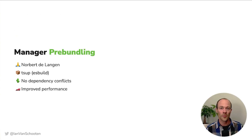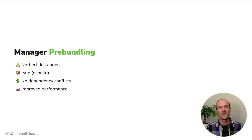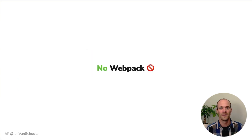Another big change, thanks to heroic efforts from Norbert, is that Storybook is now pre-bundling its manager UI. In the past, it would install packages like Emotion and React Router that it used internally into the user's node_modules and that could conflict with versions they already had there. Now instead, a tool called TSUP, which is powered by ESBuild, is being used to pre-bundle our packages. That means Storybook won't need to build itself each time it starts up. And if you're using one of those Vite-based frameworks, Webpack will be nowhere to be found in your node_modules. That's right — we heard you asking for this loud and clear.